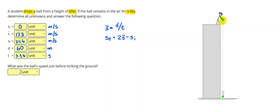The problem says what was the ball speed just before striking the ground. That's going to be my final speed. And again, 34.6 meters per second.